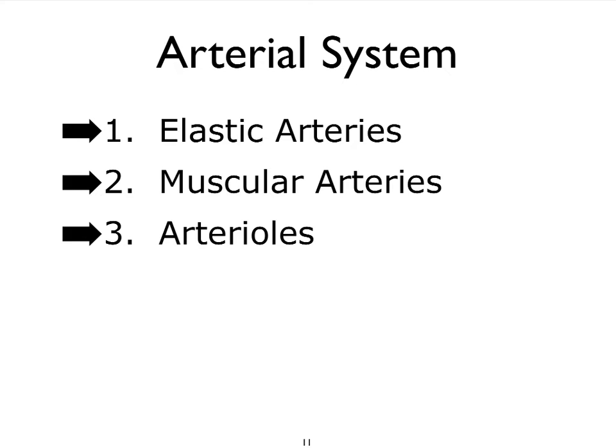Within the arterial system, we see three types of vessels. We have the elastic arteries, the muscular arteries, and the arterioles. So let's take a look at each one of these.